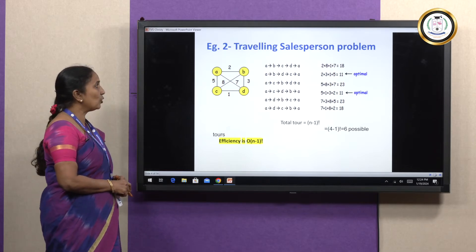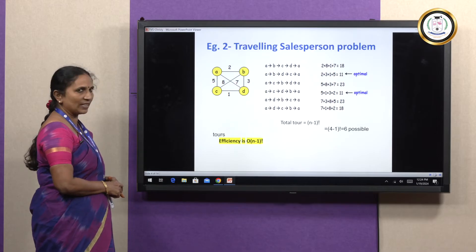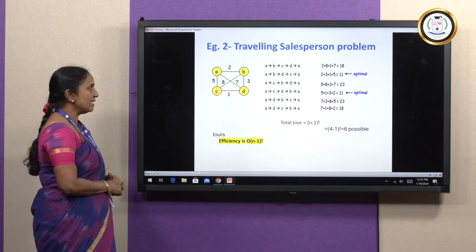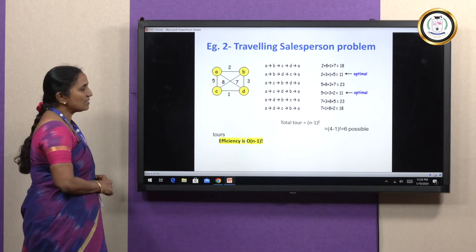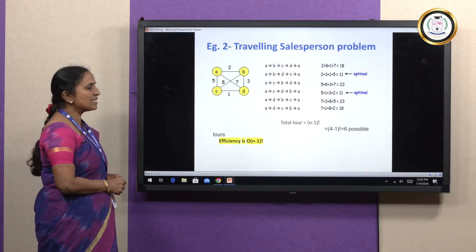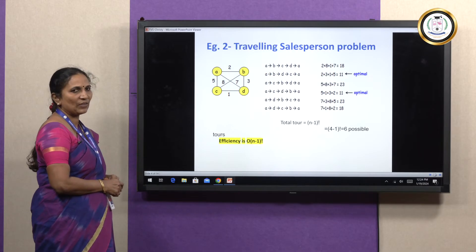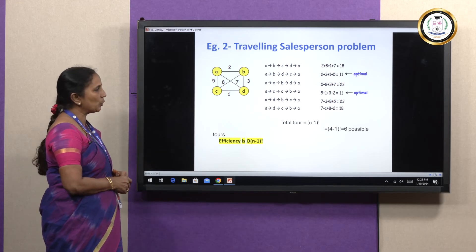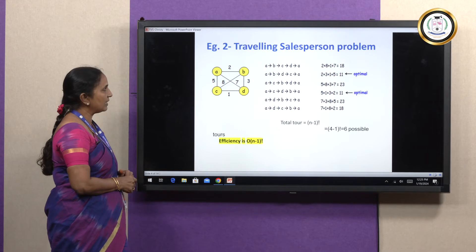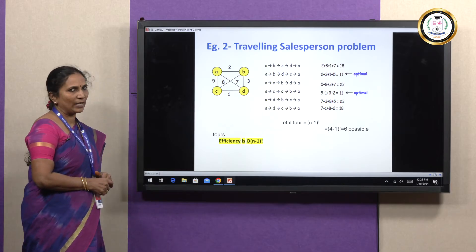Or from A, we can come to C, go to D, then B, and come to A. Or A, D, B, C, and A. Or A, D, C, B, and A. These are the various options. The objective function is the one which gives the minimum cost. From this, we are getting two optimal solutions — solution 2 and solution 4 — giving the optimal solution. If there are four cities, the various possible feasible combinations are six, that is (n-1)! = 3! = 6 possible combinations. In general, the efficiency is O((n-1)!).